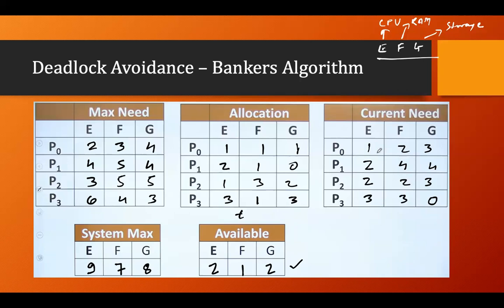With that particular resource availability, no process can execute further — this represents an unsafe state. Let's slightly change the scenario to nine instances each for E, F, and G, giving availability of two, one, two. Again checking: P0 requires one for E (can fulfill), two for F (cannot — only one available), three for G (cannot). P1 cannot be fulfilled. P2 cannot. P3 cannot. No process can execute.